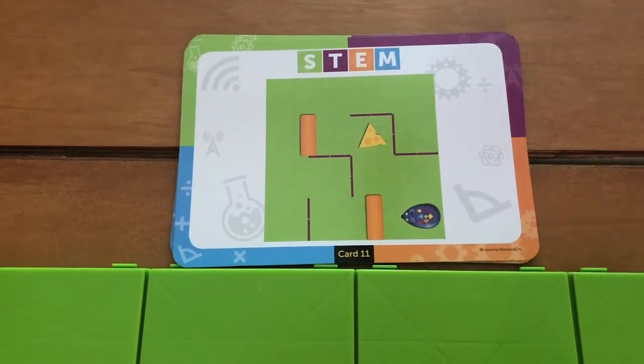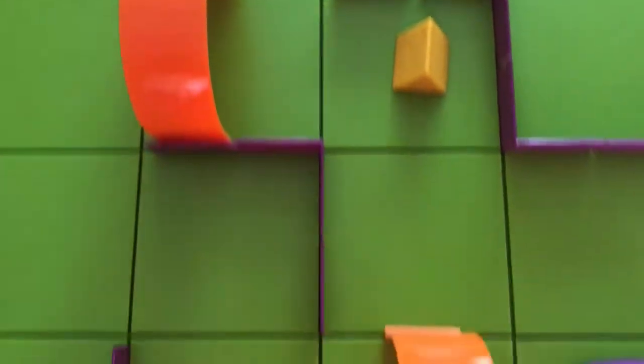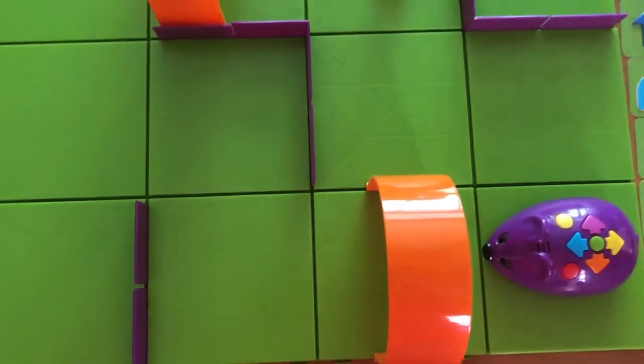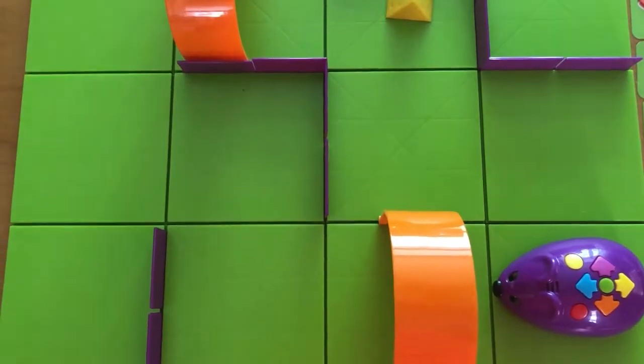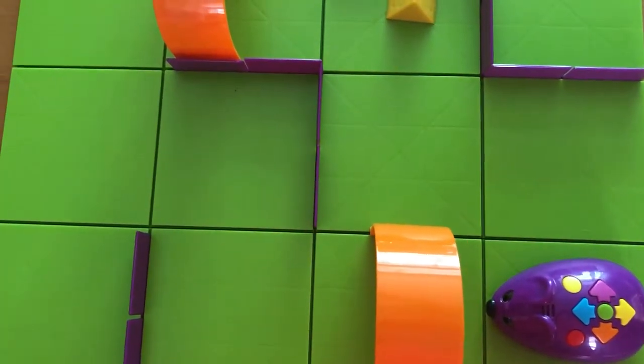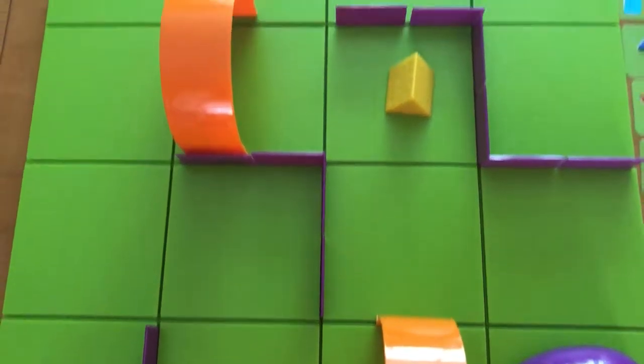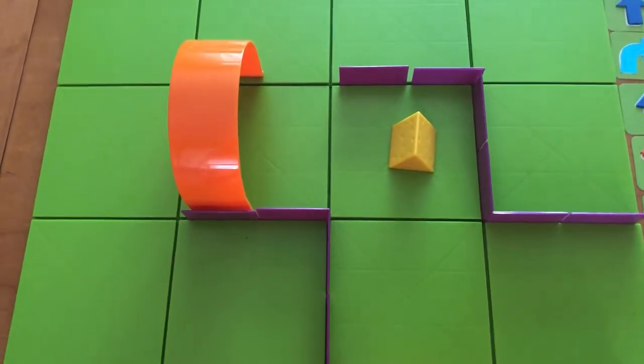Number 11 has the mouse starting in a 4x4 grid. The mouse starts in the bottom right-hand corner, that's row 4, column 4. And then the cheese is in row 2, column 3.